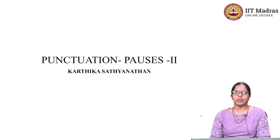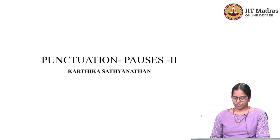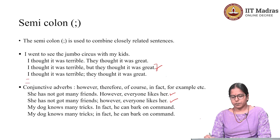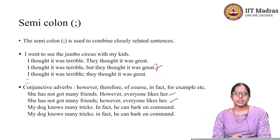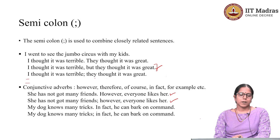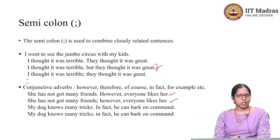Let us get started with semicolon. A semicolon is used to introduce or combine two closely related sentences. Let me give you an example: I went to see the Jumbo Circus with my kids. I thought it was terrible. They thought it was great.